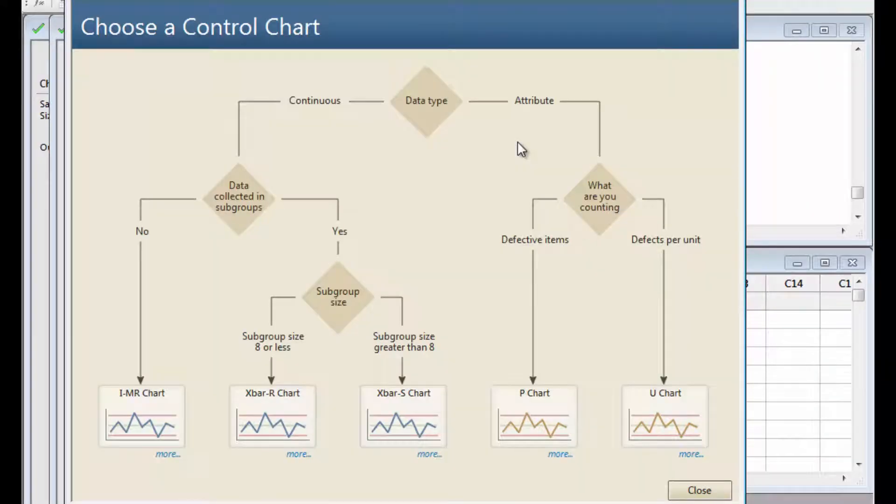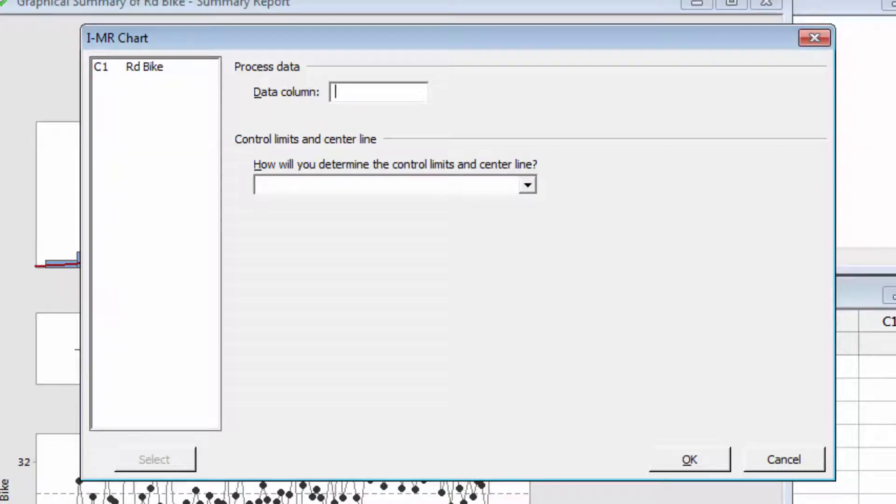The Assistant's decision tree guides you to the appropriate control chart for your situation. Since we have continuous data that has not been collected in subgroups, choose the IMR chart. In the dialog box, select the Road Bike Data column.